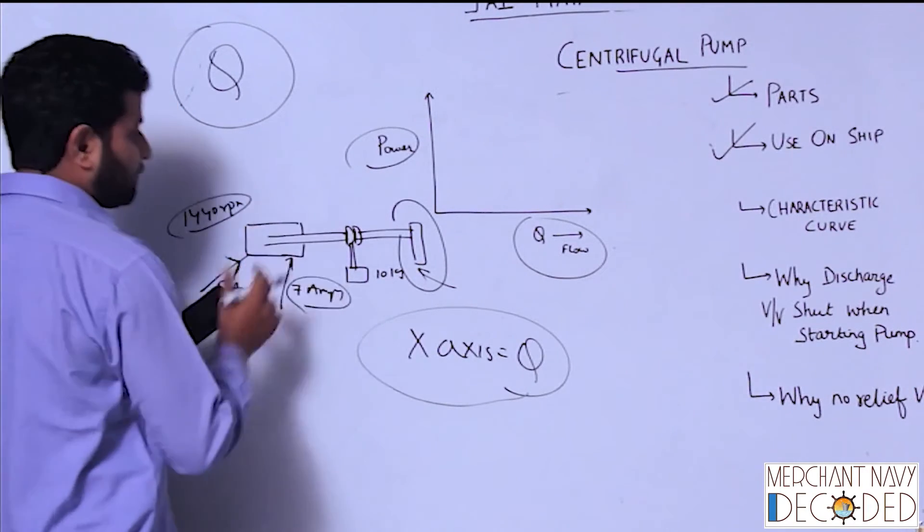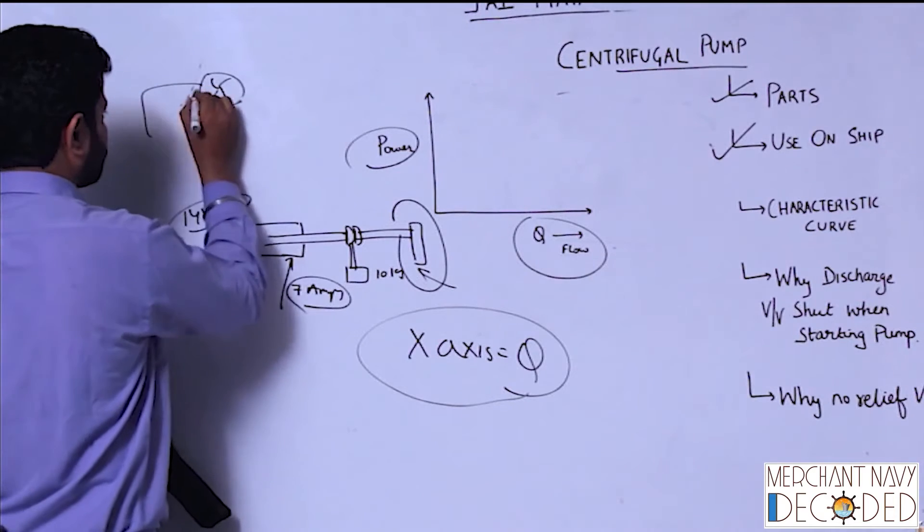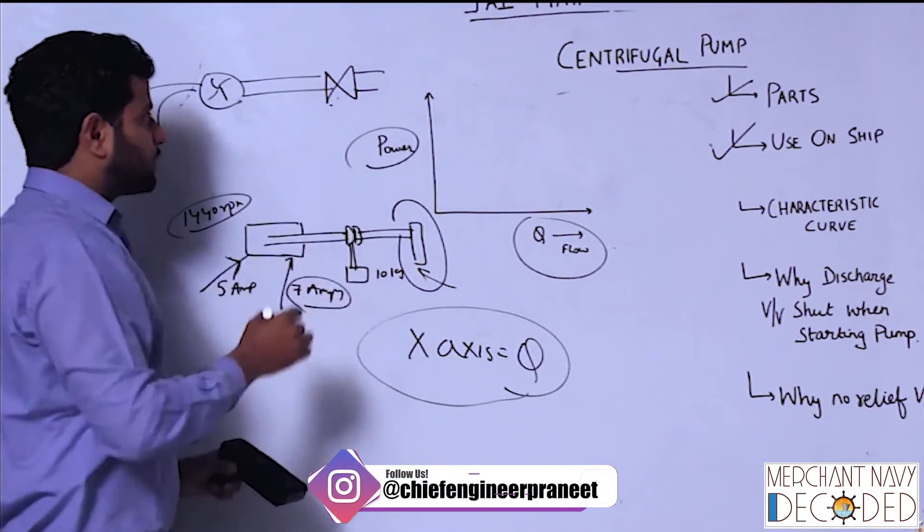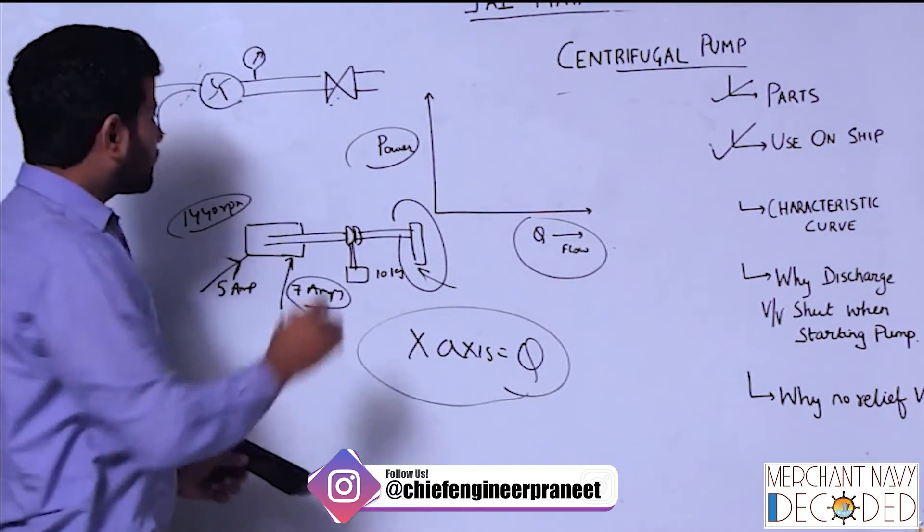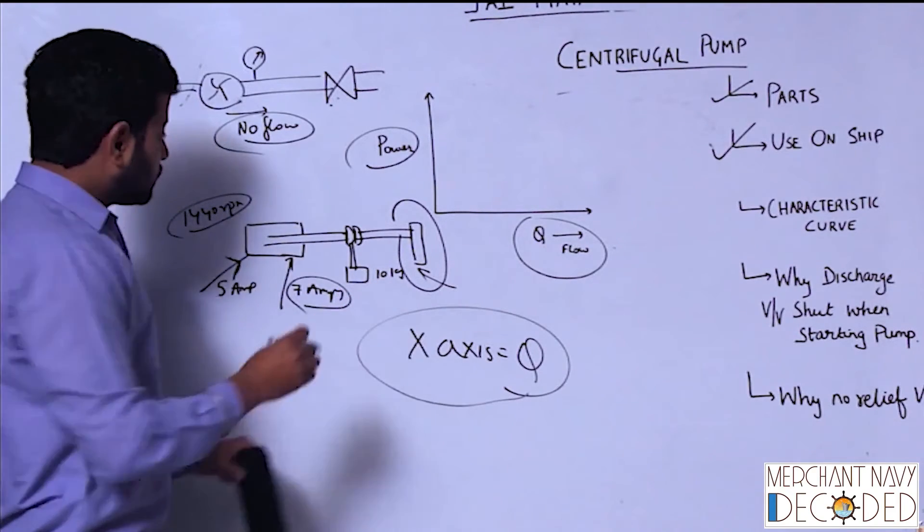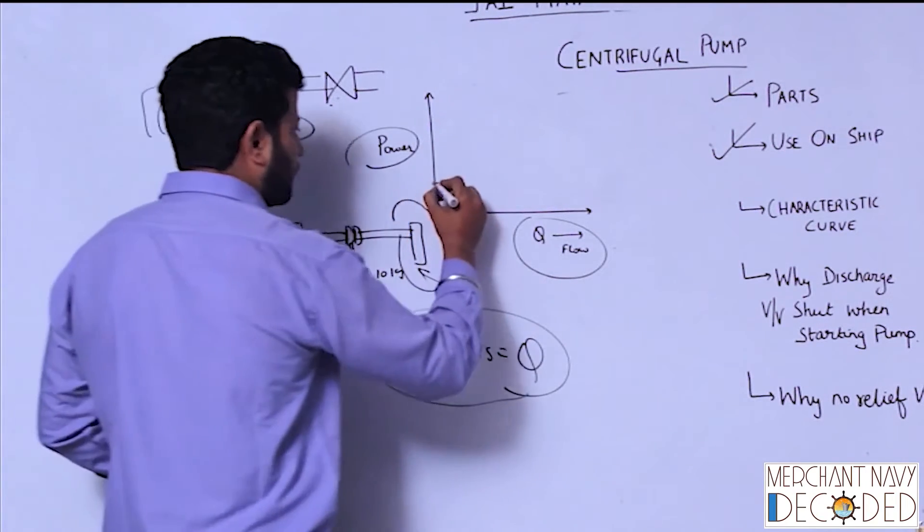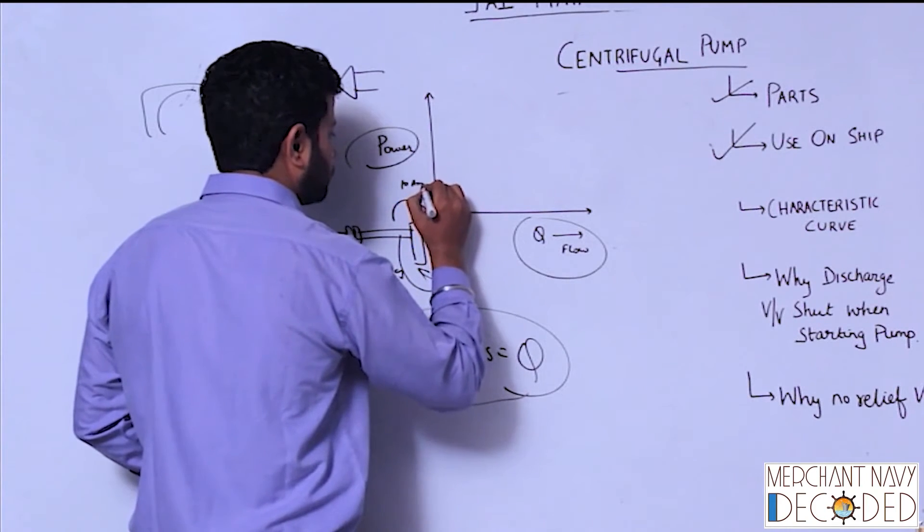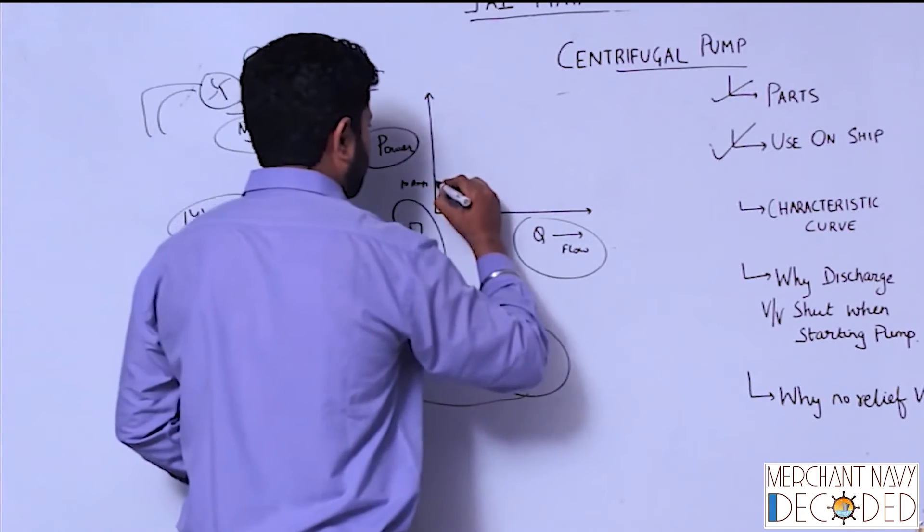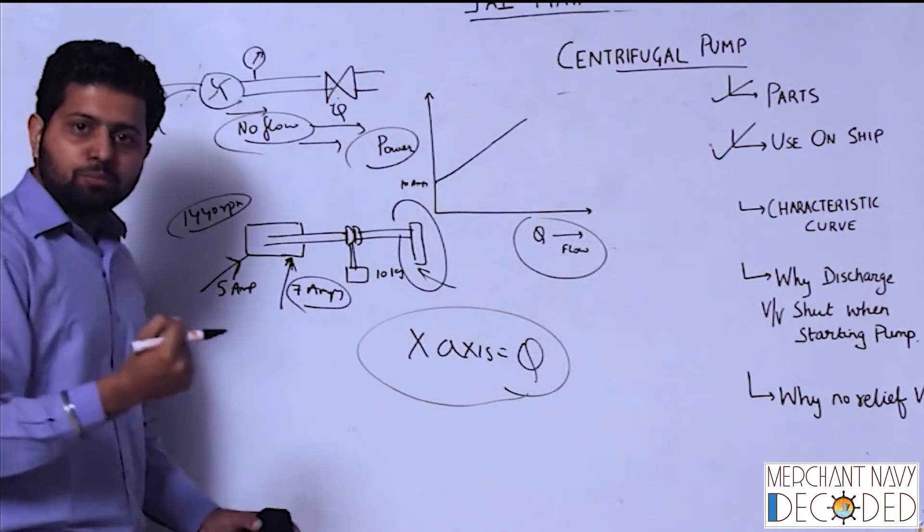Okay guys, so what does that mean? If I have got a centrifugal pump fitted over here and the discharge valve is shut, so what is happening? Discharge valve is shut. So as I told earlier, pressure is going to increase, but since there is no flow, no flow, the motor current that is drawing is minimum. Minimum current, so let's say it's 10 amps.